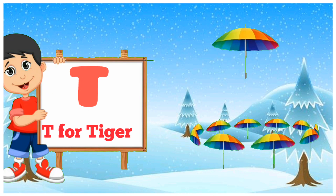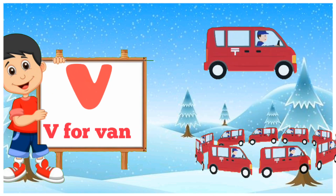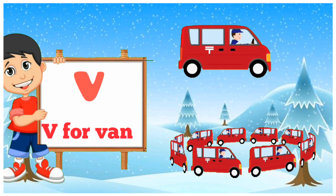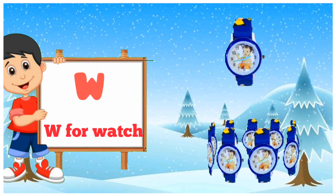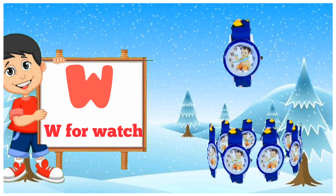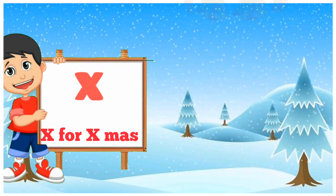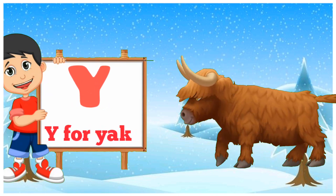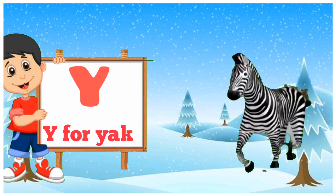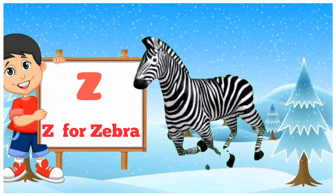G for umbrella, G for pen, W for vase, X for egg smell, Y for yak, G for zebra. Let's try zebra.